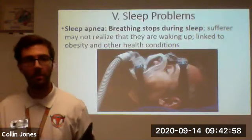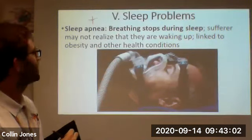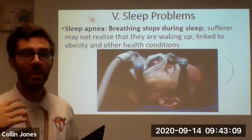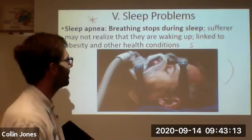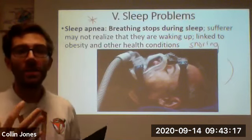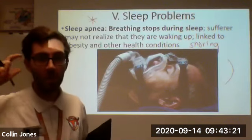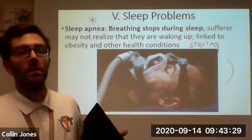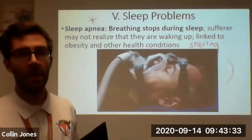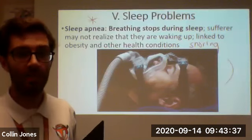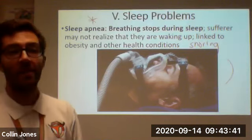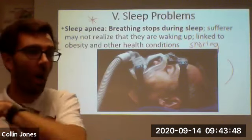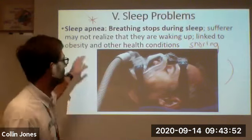What can go wrong with sleep? Sleep apnea — put a star by it. If you've seen someone wearing one of those masks, that's usually for sleep apnea, which is tied to snoring and other health conditions. It's when you stop breathing during sleep — something goes wrong with your medulla and pons — and for a split second you stop breathing. The individual wakes up almost suffocating, gasps for air, then falls back to sleep. This can happen dozens or even hundreds of times a night, and the person may not realize they're never getting into delta sleep or REM sleep. It's linked to heart disease, obesity, and other health conditions.